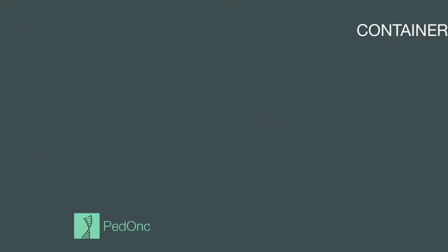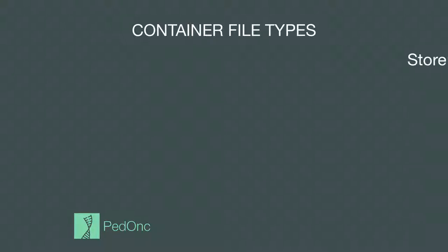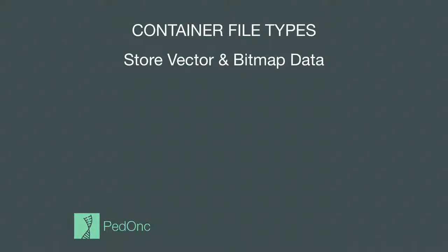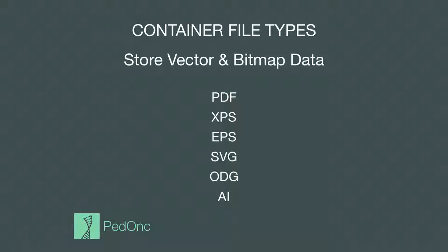Lossy bitmap file types include JPEG, which intentionally reduces image quality and distorts data to greatly reduce file size, and TIFF when using lossy compression. In manipulating images for science — whether for analysis or publication — lossy file types and lossy compression should never be used. Preserving full bit depth data from the original image is also important. Container file types can store both vector and bitmap image data, including PDF, XPS, EPS, SVG, ODG, and AI. The most common formats most researchers will want to use are PDF and SVG, as these are widely supported.